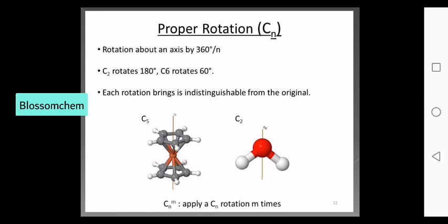Rotation about an axis by 360/n gives us specific angles. For example, 360/2 is 180 degrees, so C2 rotates by 180 degrees. C6 rotates by 360/6, which is 60 degrees.